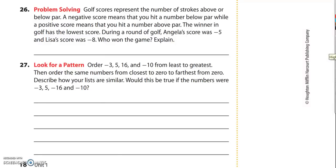The winner in golf has the lowest score. This is the most important part right here. The winner in golf has the lowest score. The question reads during a round of golf, Angela's score was negative 5 and Lisa's score was negative 8. Who won the game and explain?